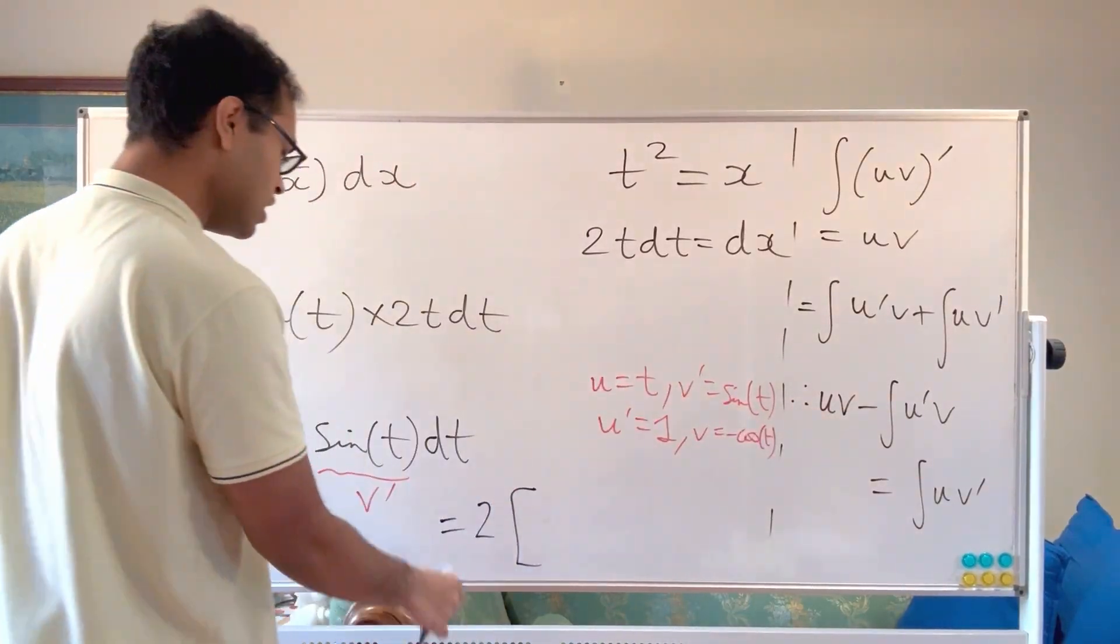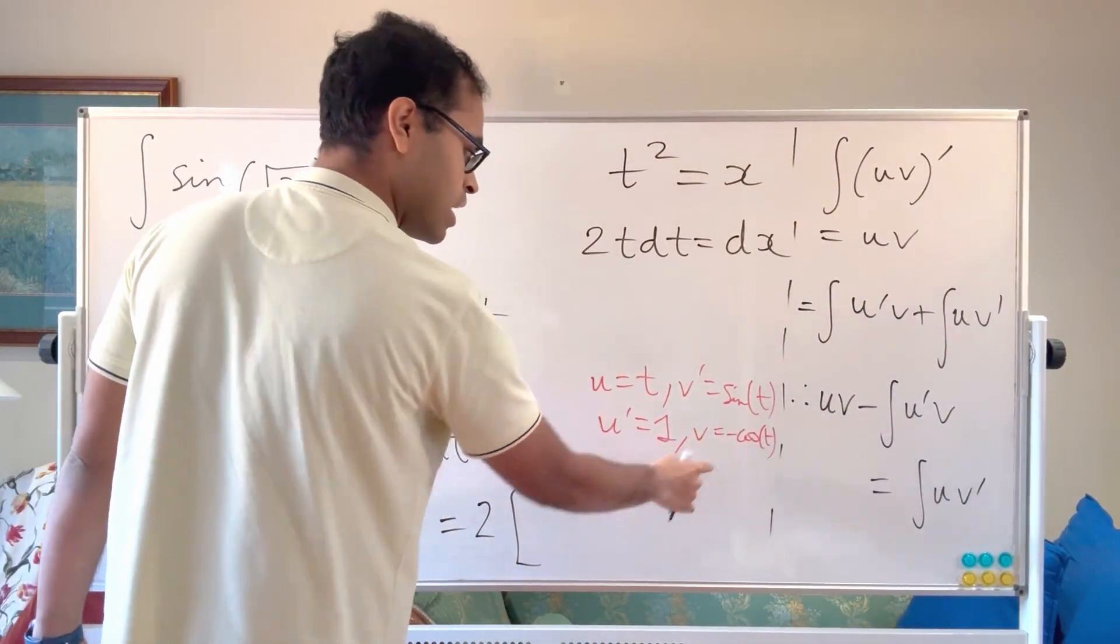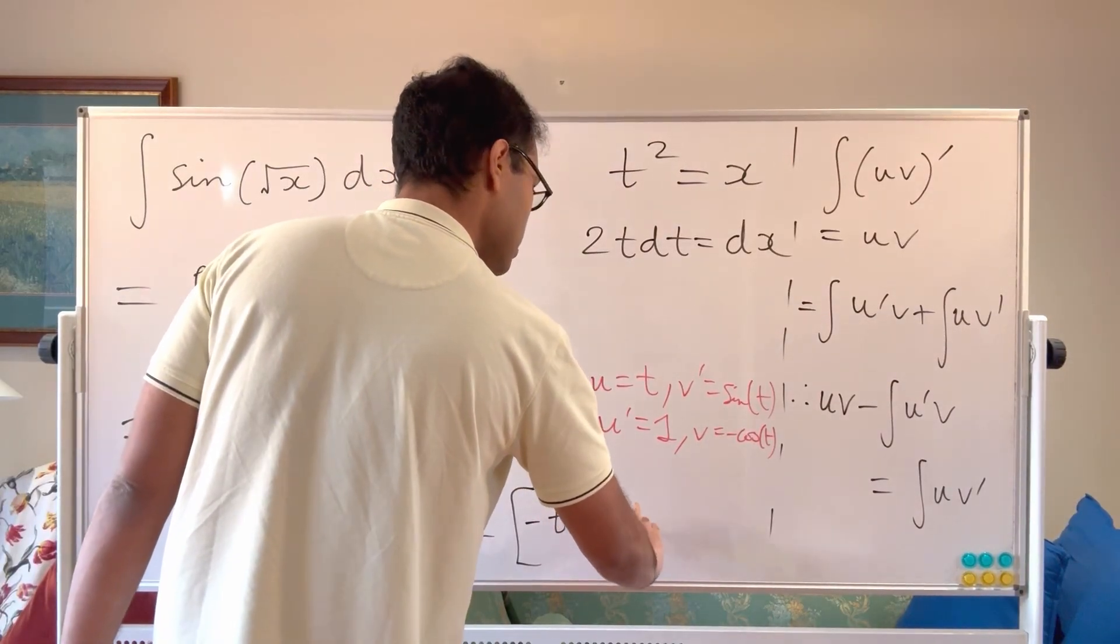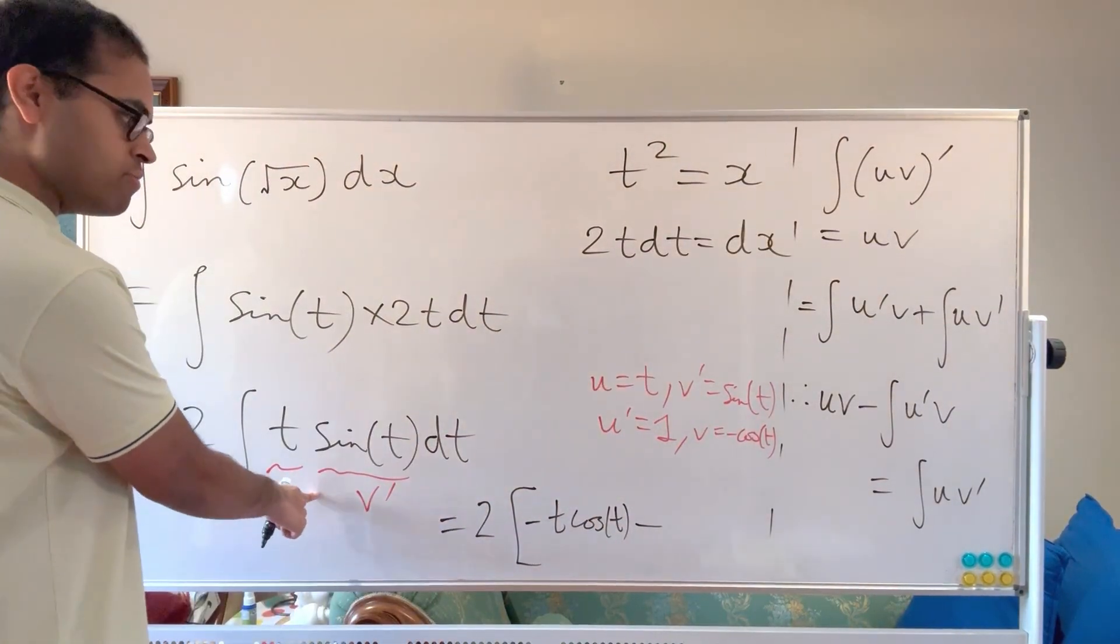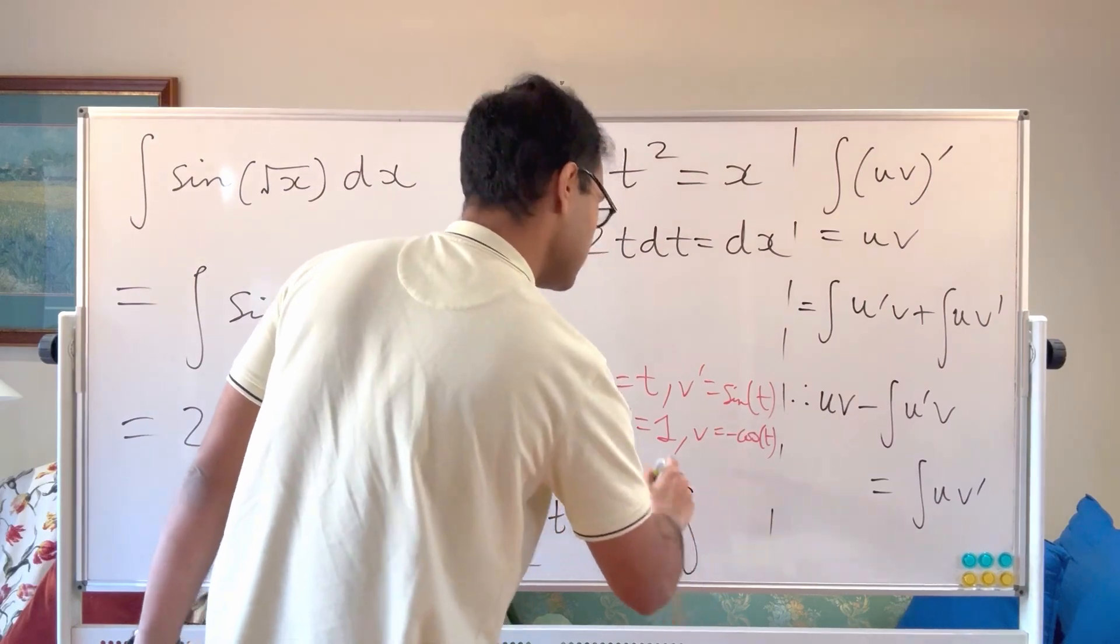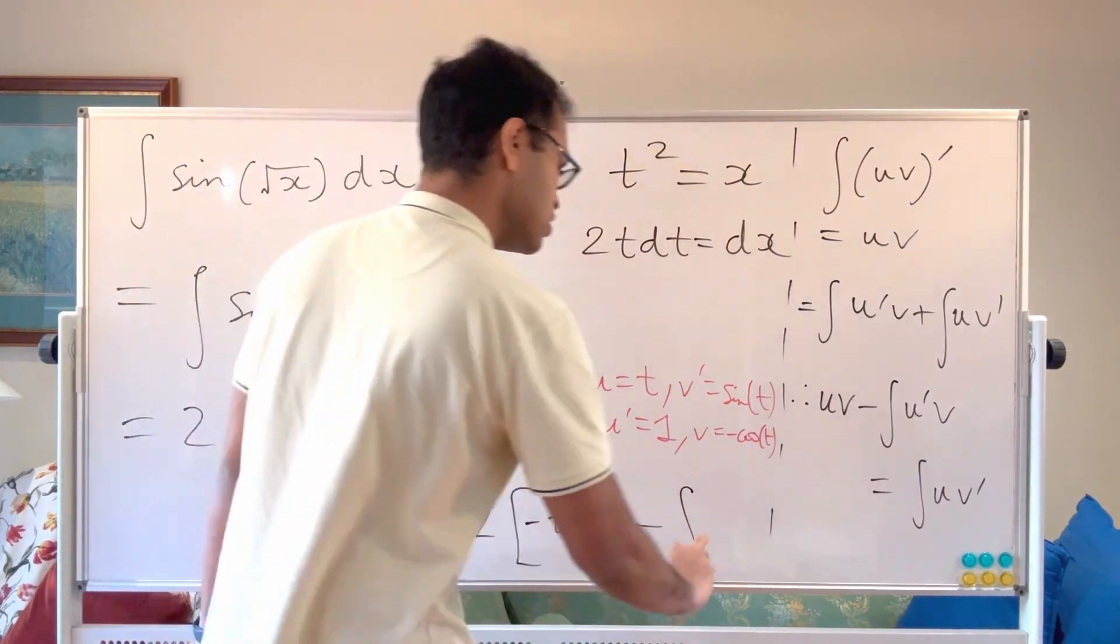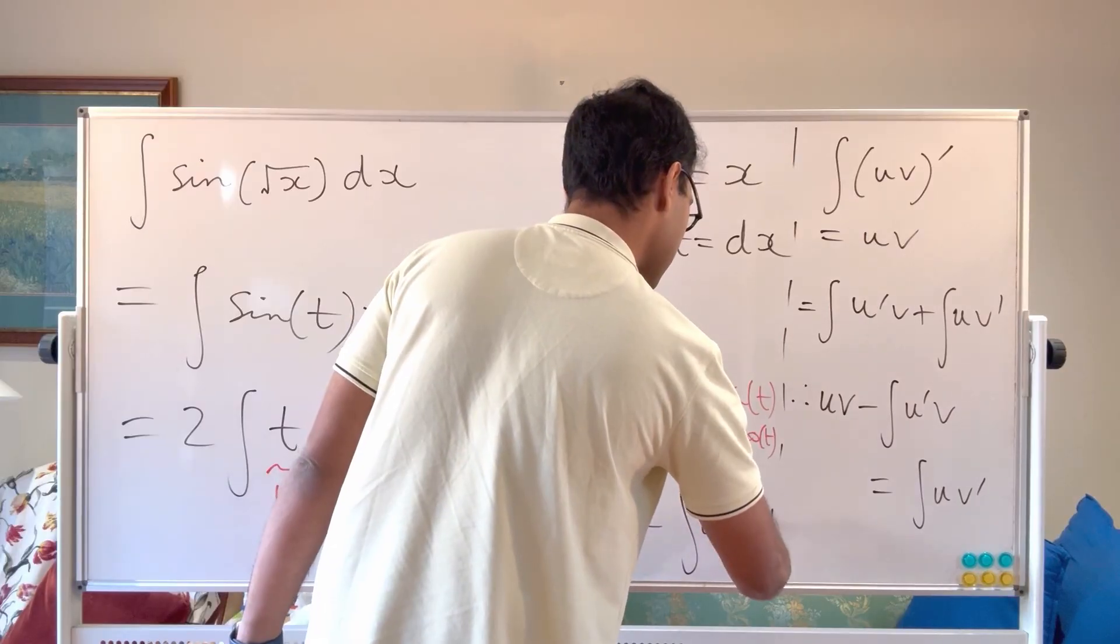So we've got u prime v. So we've got this formula here. So u v is going to be t times negative cosine t. So it's going to be negative t cosine t. And then we're going to subtract off the integral of u prime v. So the integral of u prime v is the integral of 1 times u prime v is negative cosine t. So it's going to be the integral of negative cosine t dt.